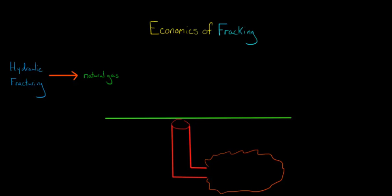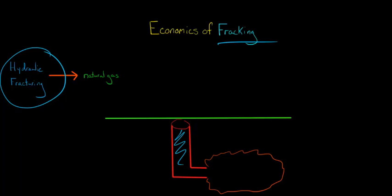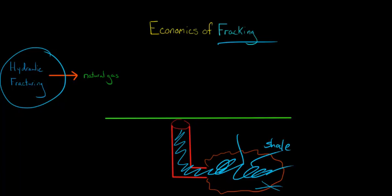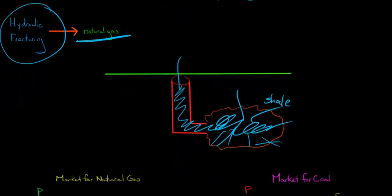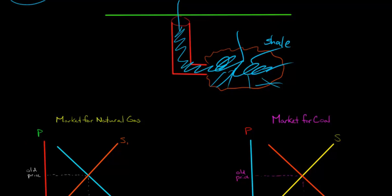In this video, we're going to discuss the economics of fracking, which is a really good way to understand how supply and demand works in a real market. Fracking stands for hydraulic fracturing — it's basically a way that companies will drill a well into the ground and then spray water, sand, and other items into shale rock. They break up the shale rock and are able to extract oil and natural gas, which can be used to heat people's homes or to power air conditioning. We're going to have some really interesting economic effects from this increase in supply of natural gas.